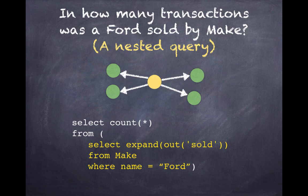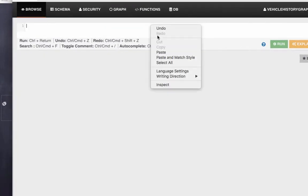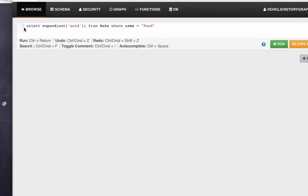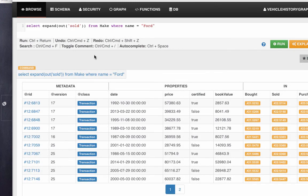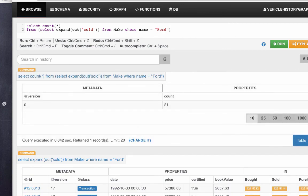We nest this inside of count and we'll see how many Fords were sold. I go to my browse window and I type in my query, select expand out sold from make where name equals Ford. I run and I see all of the different transactions. I'll say select count star from that result and I see that there are 21 different Fords sold.